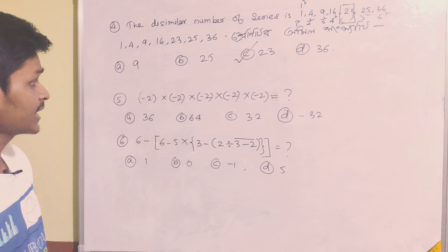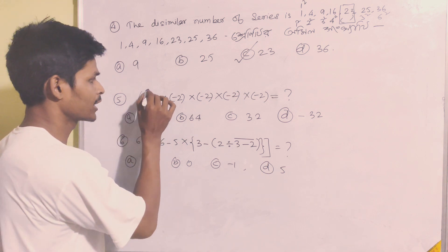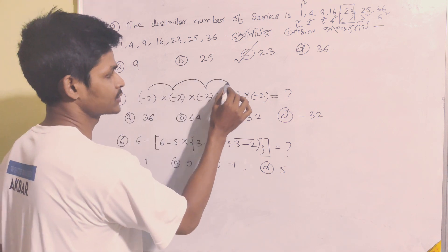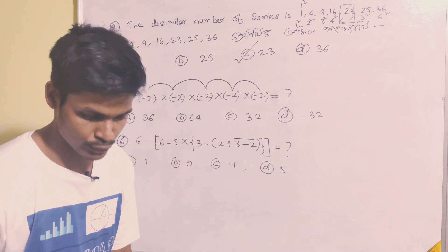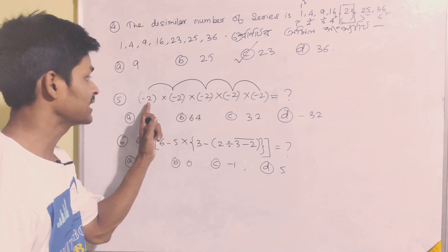Next question: if you have minus 2 multiplied repeatedly — minus 2, minus 2, minus 2.